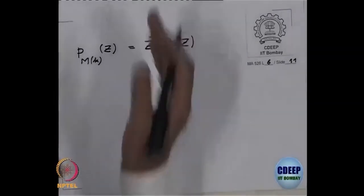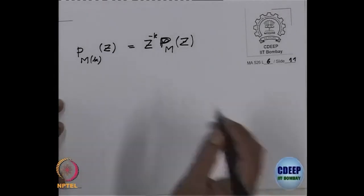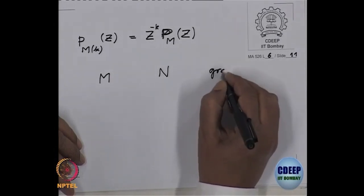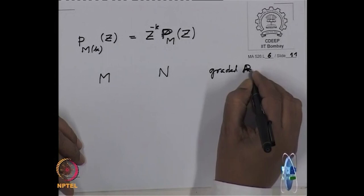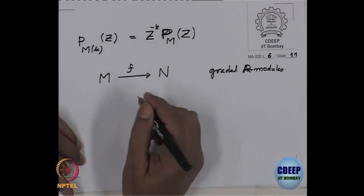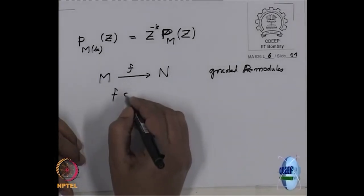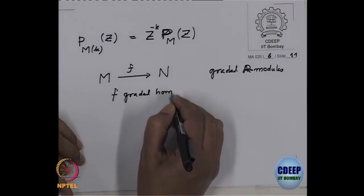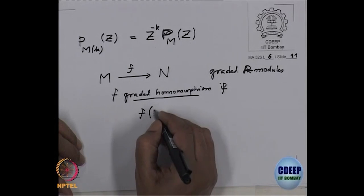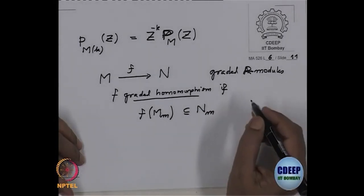I am collecting easy properties of this Poincaré series. Now before I state the next one, suppose I have two graded modules M and N, graded R modules. Then what is the homomorphism between them? That should respect the gradation. That means the homogeneous component of degree N should go inside homogeneous component of degree N. So F is called a graded homomorphism if F(M_m) is contained in N_m.